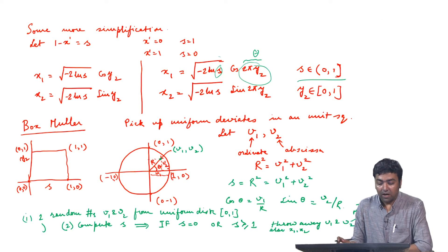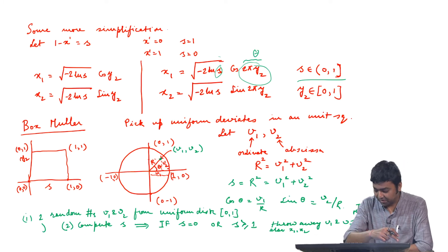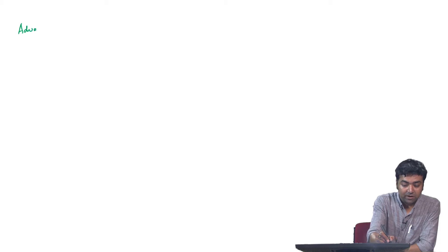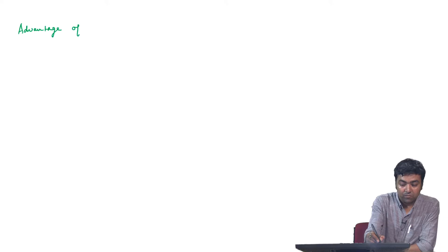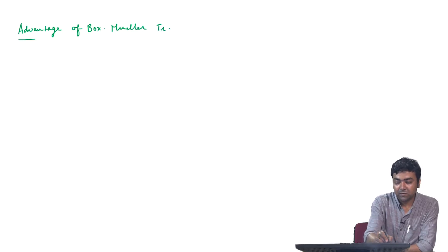The question is, I could have stopped earlier, but why did we do this extension into the Box-Muller transformation? We will see that now. What we are looking at is the advantage of the Box-Muller transformation.